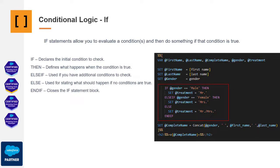So, if the condition IF gender equals male is satisfied, we assign Mr. to the treatment variable. Since there's a second potential condition, if gender equals female, we introduce an ELSE IF statement. In this scenario, if gender is female, we assign Mrs. to the treatment variable.